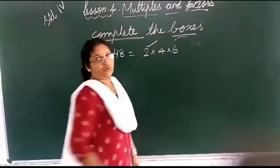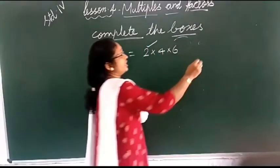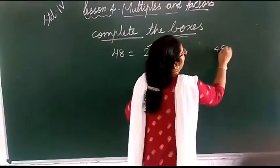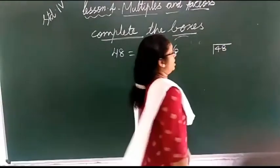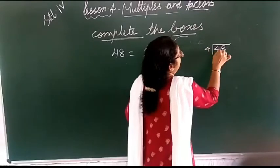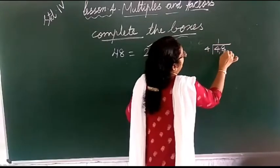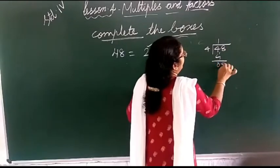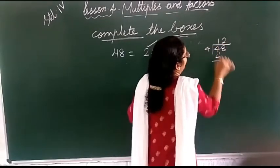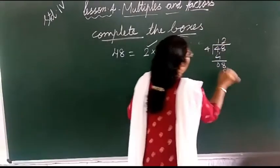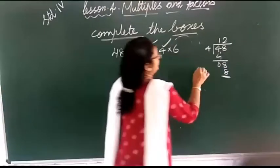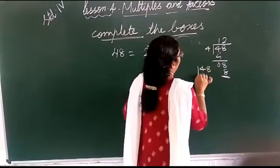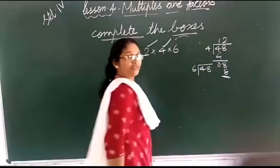Don't use the multiple of 48. 4 times 8 is 48. 4 times 8 is 48. 4 is a multiple. 48 means 6 is also a multiple. 6 is a multiple.